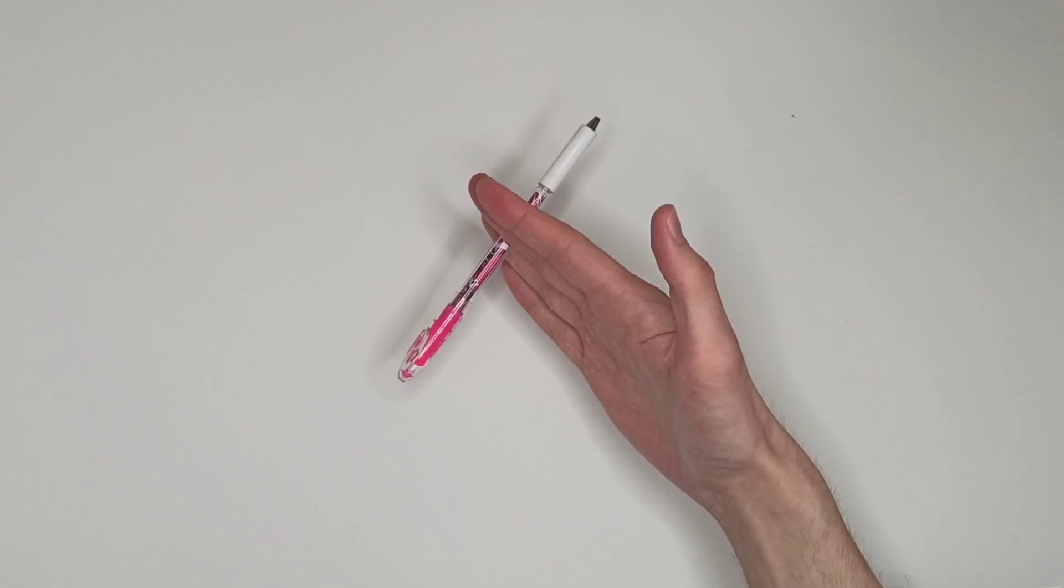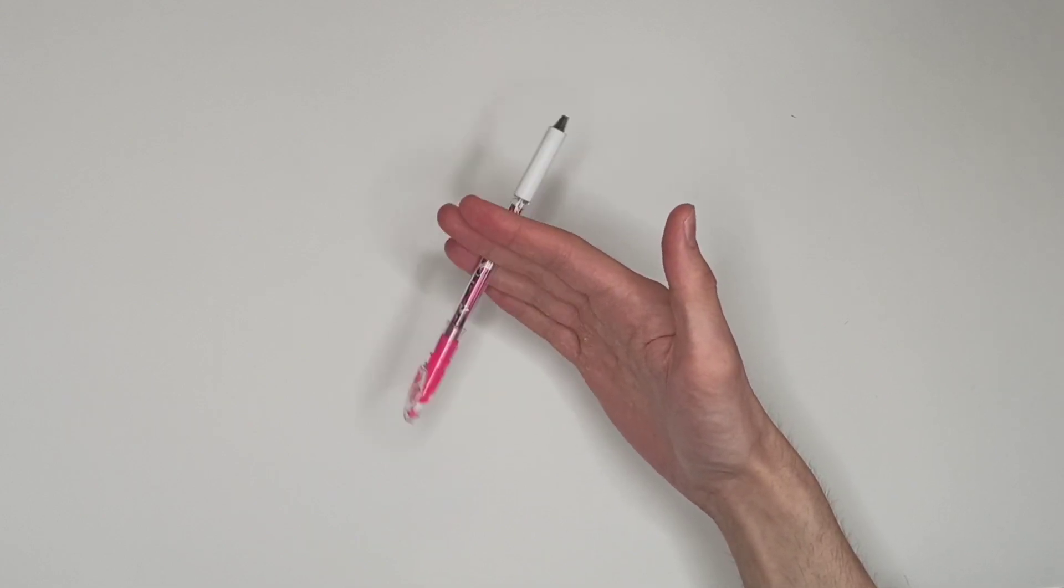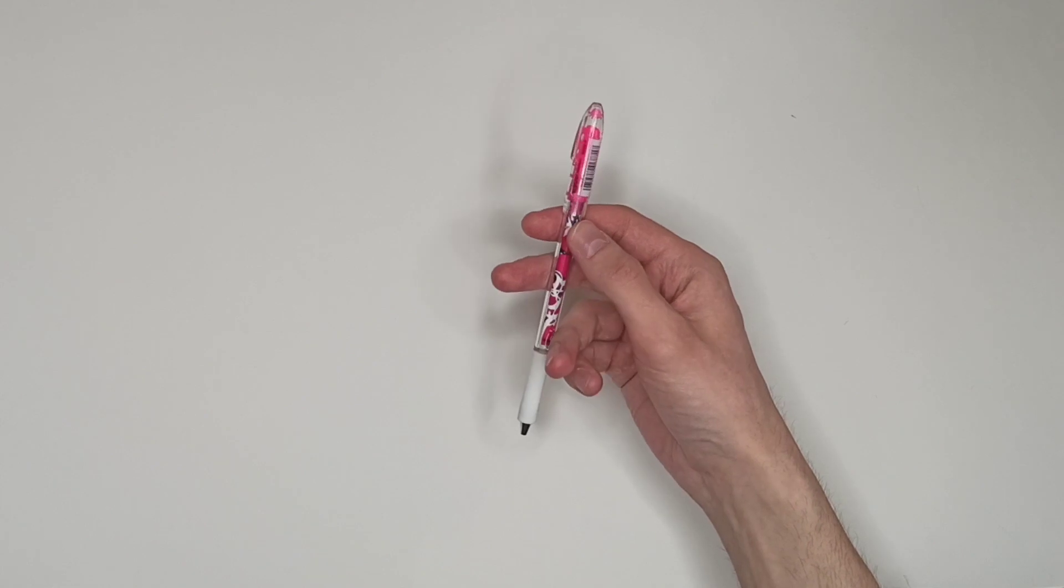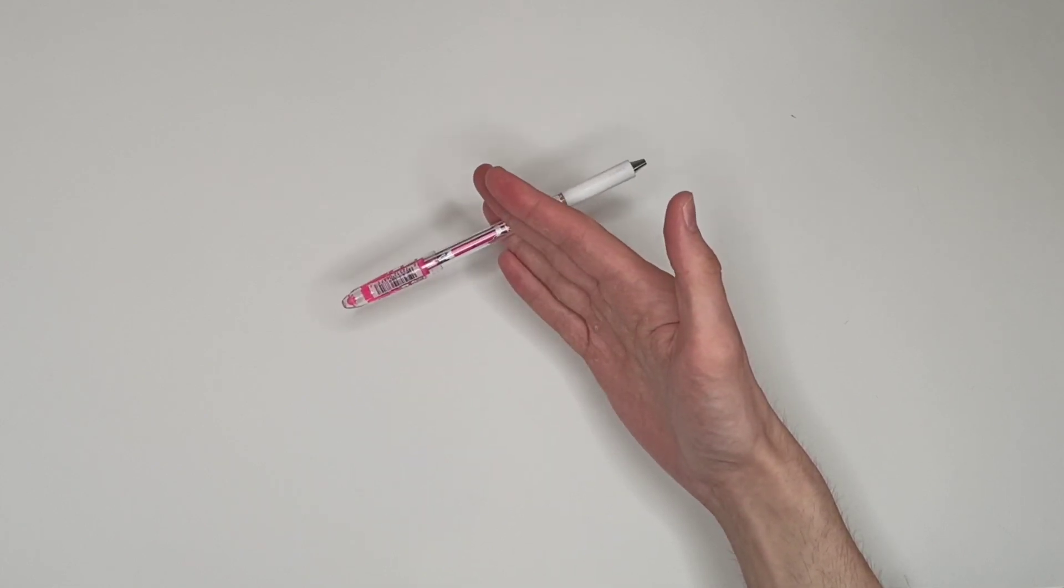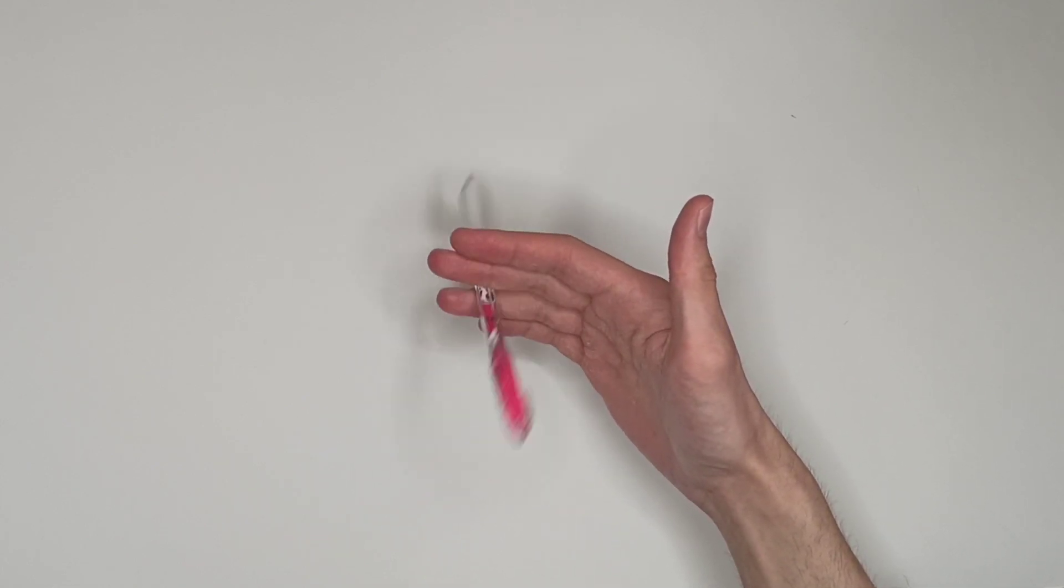The second step is to open up your fingers while holding the pen. Doing so will bring the pen outwards in a straight position, just like you see here.